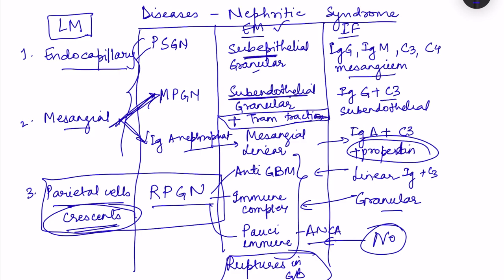In this video, the features of nephrotic and nephritic syndromes were covered — how they differ in pathophysiology — along with a simplified overview of light microscopy, electron microscopy, and immunofluorescence findings across key diseases. Tables summarizing these features can be used for memorization.